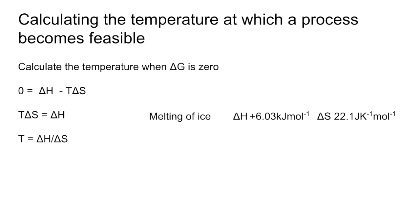So again, bringing the melting of ice process, we know the answer is going to be 0 Celsius or 273 Kelvin. So plugging the numbers in, T is equal to 6.03 over 0.0221. So that gives us a temperature of that calculator value there in Kelvin. So that's 273 Kelvin, 0 degrees Celsius. So that is the temperature at which this process becomes feasible.